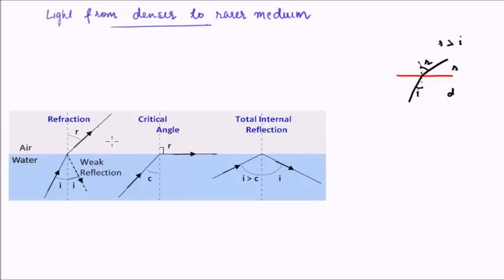Because we are studying light traveling from denser to a rarer medium — that is, from water to air — this means that initially when the angle of incidence is 0 degrees, the ray of light will just pass straight through. But as we increase the angle of incidence, the angle of refraction starts to increase too. However, the increase in angle of refraction will be more than the increase in angle of incidence, because it is bending further away from the normal.